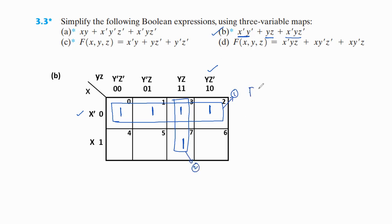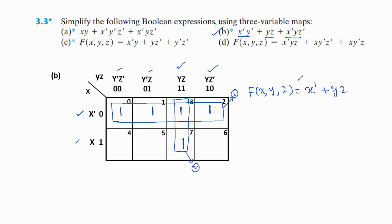Now let us write the simplified expression. For the first group, the four ones exist in the first row across all four columns, so y and z are both eliminated, giving x'. For the second group, it exists in both rows, so x is eliminated; it is in the y,z column only, giving y·z. So the simplified expression for the second expression is x' + y·z.